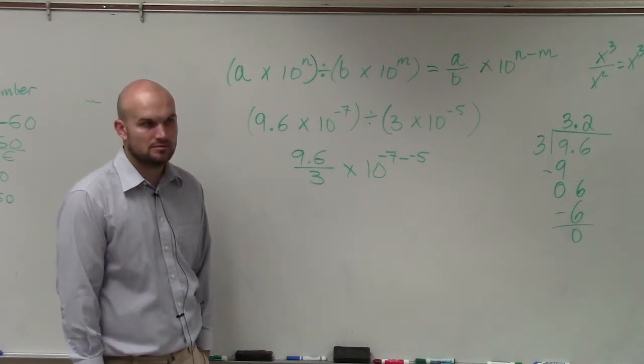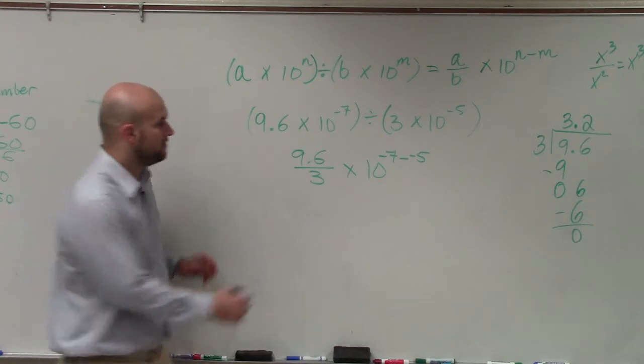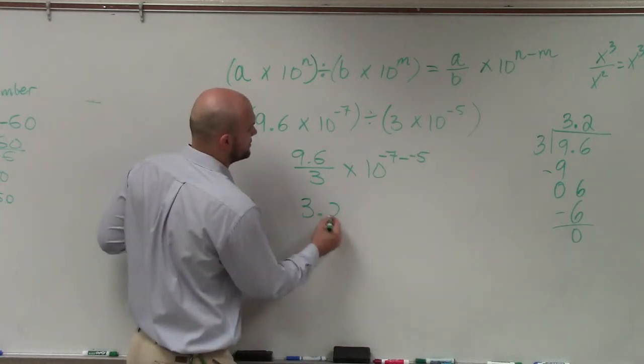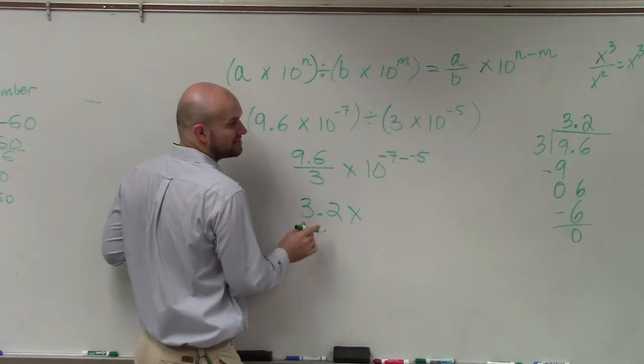Any questions? Good. So therefore, this is 3.2 times 10 to the negative 7 minus 5.